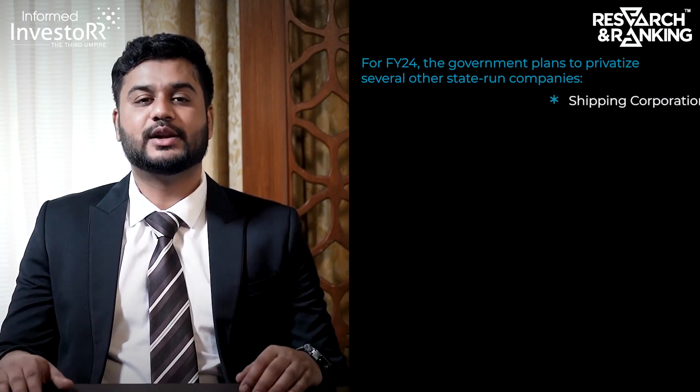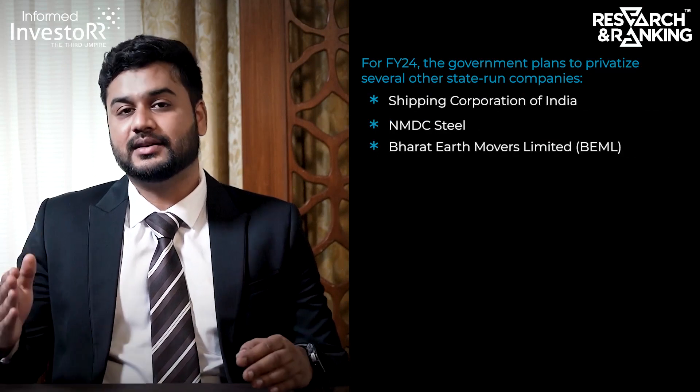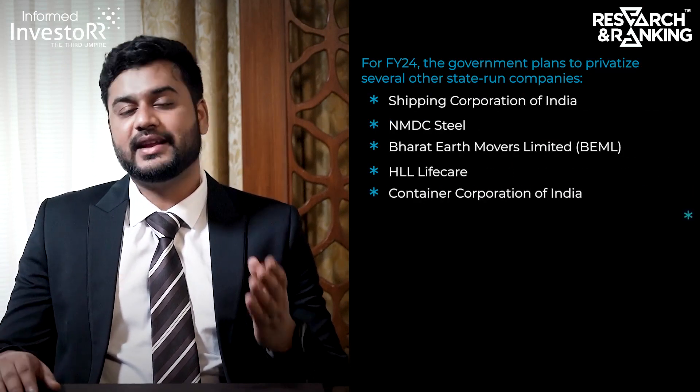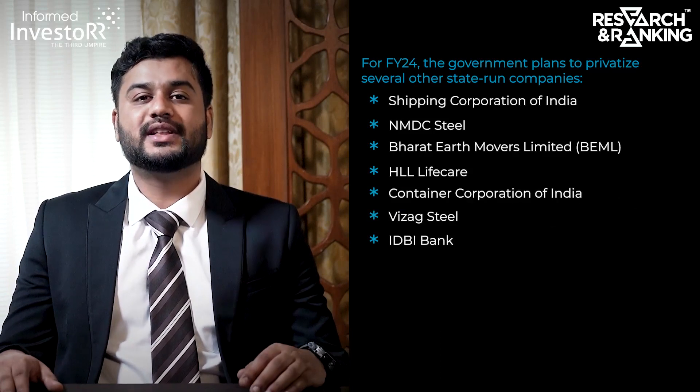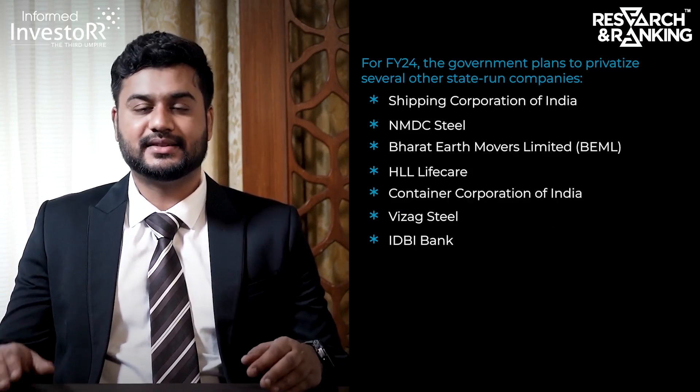In recent times, there have been significant examples of state-run companies being privatized. In fiscal year 22-23, the government completely sold its stake in national carrier Air India. Additionally, there was a 3.5% stake sale in Life Insurance Corporation. The government also divested its remaining stakes in companies like Paradi Phosphates, Indian Petrochemicals Corporation Limited, and Tata Communications. Looking ahead to fiscal year 23-24, the government plans to privatize Shipping Corporation of India, NMDC Steel, Bharat Earth Movers Limited, HLL Life Care, Container Corporation of India, and WAPCOS. There is also a plan to divest the government's holdings in IDBI Bank.